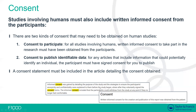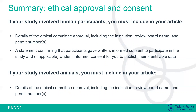I've included examples of consent statements that have been included in papers previously published with us. One final point: if the participants in your study are children, minors, or have a reduced mental capacity and cannot give consent themselves, then consent must be obtained from a parent or legal guardian. To summarize the ethical and consent procedure: if your study involves human participants, include details of the ethical committee approval — institution name, review board name, and permit numbers — and include a statement that written informed consent was received from participants across the applicable consent layers. If your study involves animals, you only need the ethical committee approval details.